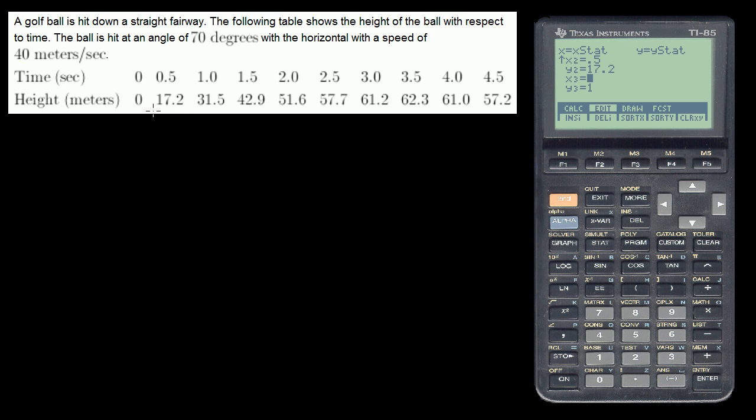When x is 2, y is 51.6. When x is 2.5, y is 57.7. When x is 3, y is 61.2. I just keep pressing enter every time. When x is 3.5, y is 62.3 meters in the air. When x is 4, y is 61 meters in the air. And when x is 4.5, y is 57.2. So I've entered all of the data.